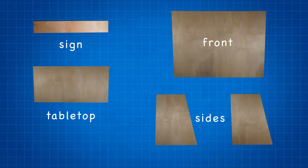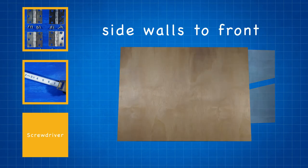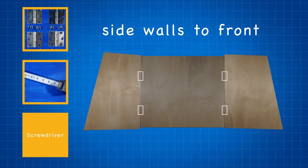With your front piece on a flat surface, mark two straight lines three inches in from the side edges. Now secure two hinges to each side piece and then secure the sides to the front piece, centering each hinge on the three-inch line.